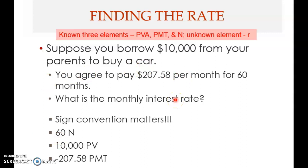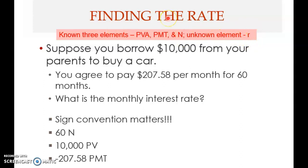Now we come to the last element in the present value of annuity. There are four elements: the present value of annuity, the payment, the number of periods, and the interest rate. We've already determined how to find the present value, the payment, and the number of periods. Now we want to determine the interest rate when it is unknown.